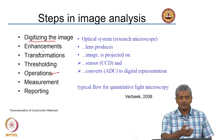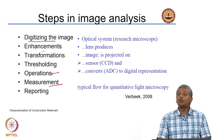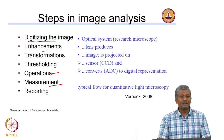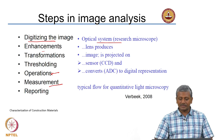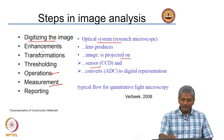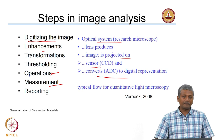Next is measurement — you can count the number of features, for example the number of white spots in the image. Then comes reporting: ultimately everything has to be reported in terms of how you interpret the image and what data you are capturing. To give an example from optical microscopy: the lens produces an image projected onto a sensor, a charge-coupled device, which is essentially your camera, and this converts the image via an analog-to-digital converter to a digital representation shown on your computer screen.